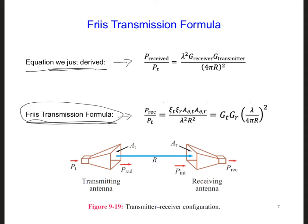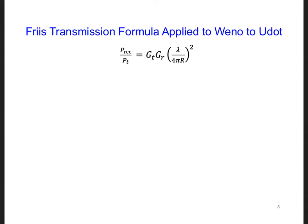The Friis transmission formula takes into account the directionality and losses of both antennas as well as the radial spreading of the propagating wave. In the future, you can go straight to the Friis transmission formula as long as you know what it accounts for and what it doesn't. Let's now use this formula to calculate the link budget from Ueno to U-dot.